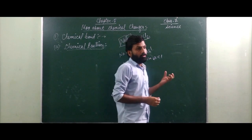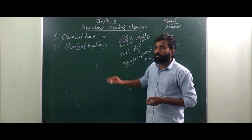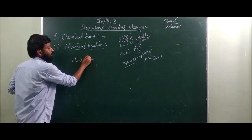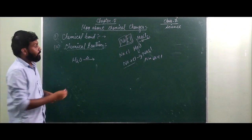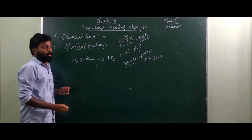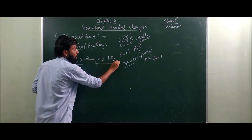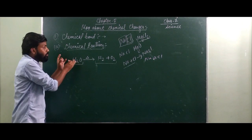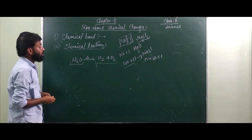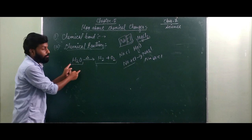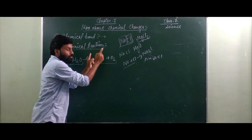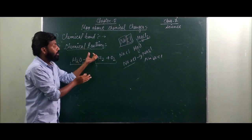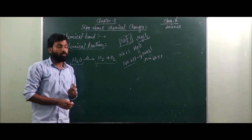Now we will discuss about the chemical reaction. In a chemical reaction, suppose you take one substance like H2O — water. If you heat this H2O, it is going to break to form H2 and O2. Before it was a single compound, and after the reaction it became two compounds: hydrogen gas and oxygen. Something occurred due to which new substances are formed. So in a chemical reaction, a substance breaks down to give two or more substances — new substances are formed.